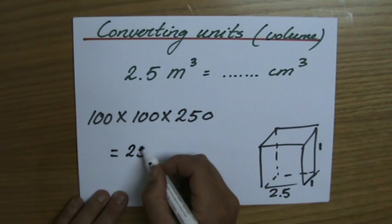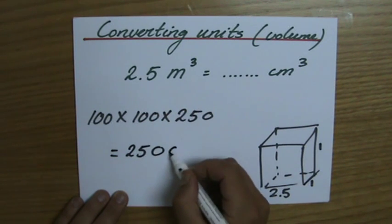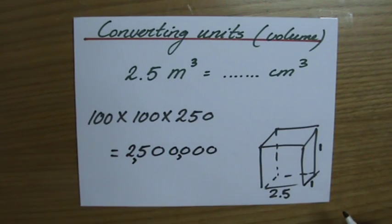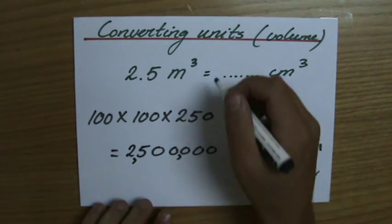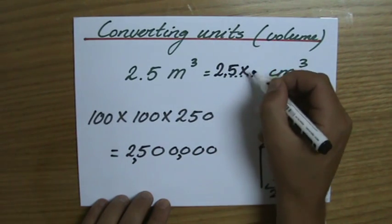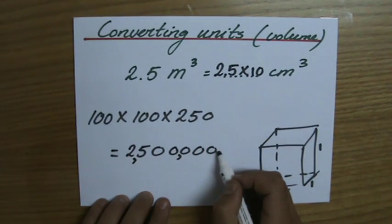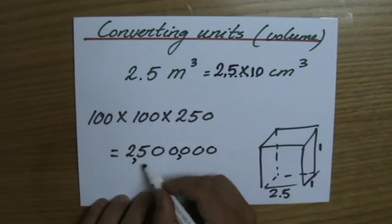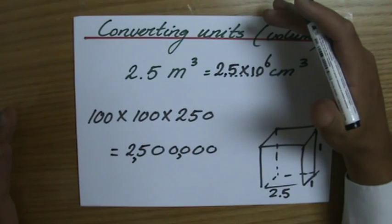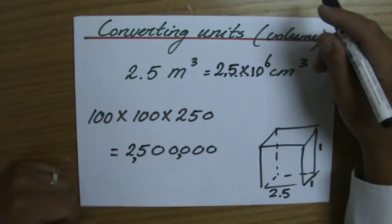That is one, two, three, four, five, that is two and a half million centimeter cubes. Yeah, and that's not gonna fit here so I'm gonna write down 2.5 times 10 to the power six. So in two and a half meter cube, there are gonna fit two and a half million centimeter cubes inside.